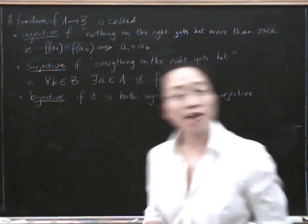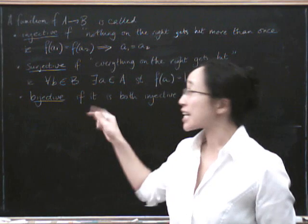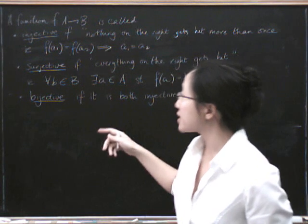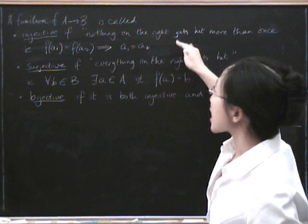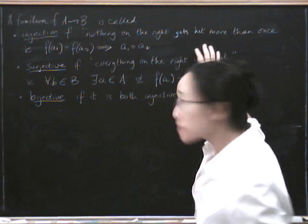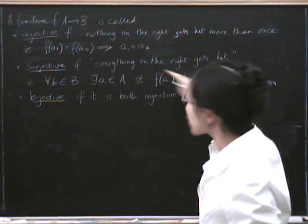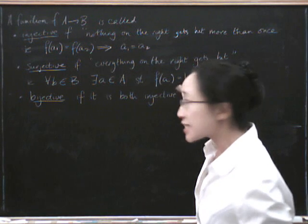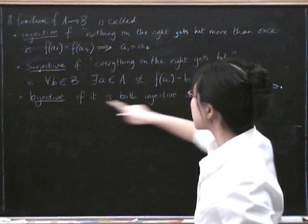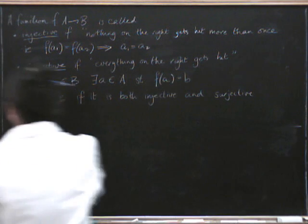Hello! I've written my definitions again a little bit higher up on the board so I can make some more space. Injective means nothing on the right gets hit more than once. Surjective means everything on the right gets hit. And bijective means it's both injective and surjective.